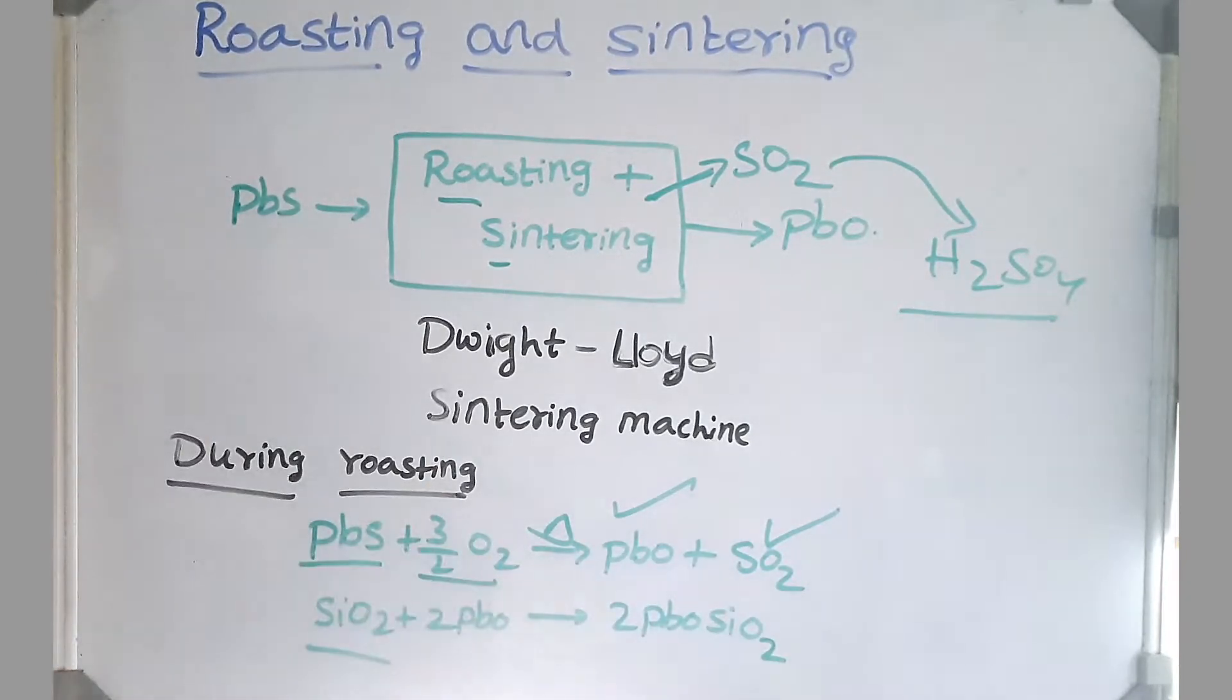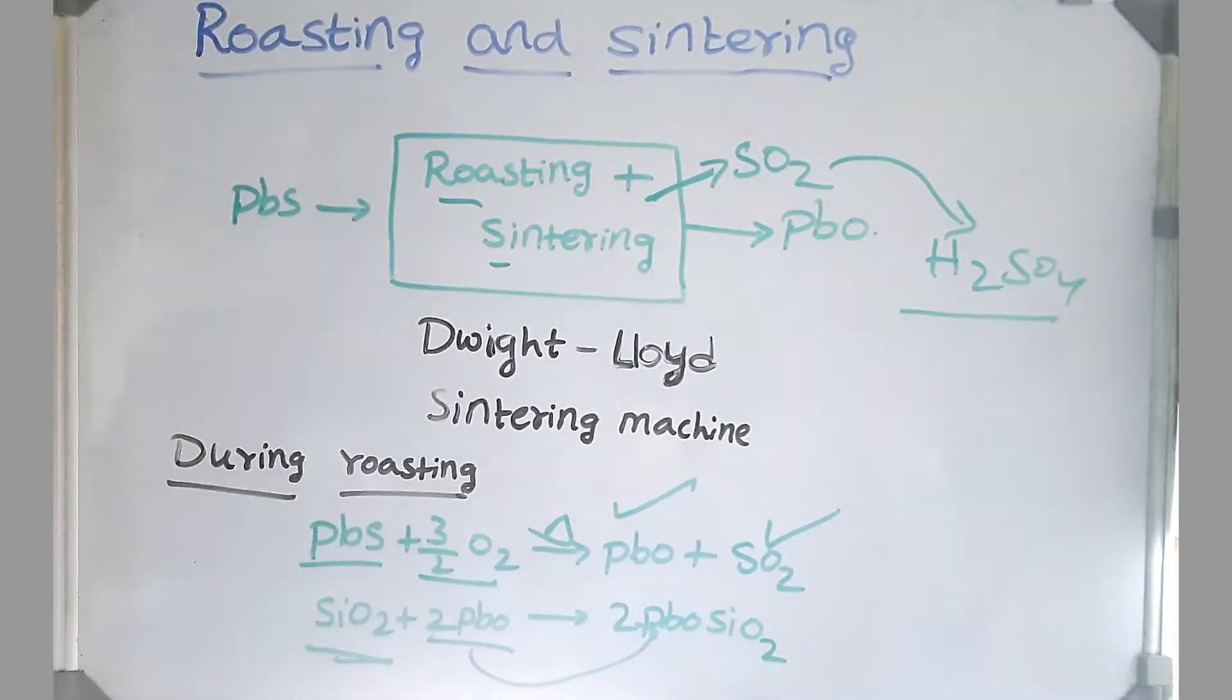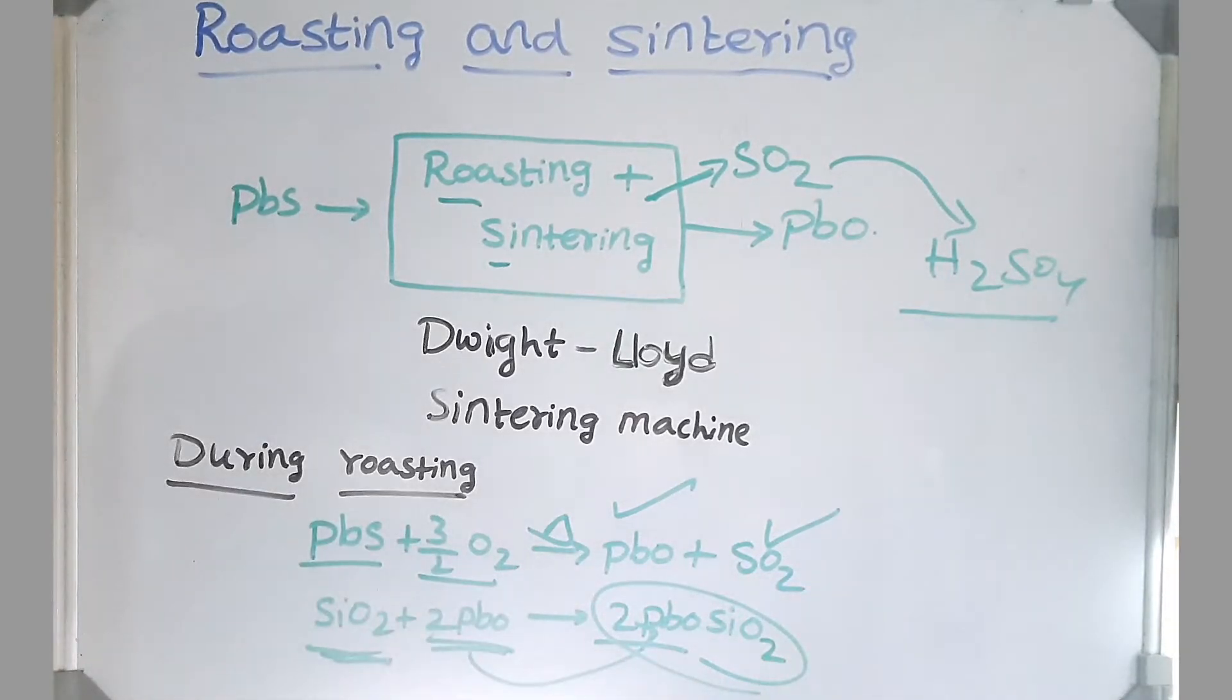SiO2 comes along with alumina. So whenever we do basic leaching, silica almost always comes with the concentrate. So here silica is locking our ore with itself. So SiO2 plus 2PbO gives rise to 2PbO·SiO2. Now let's move on to the third step.